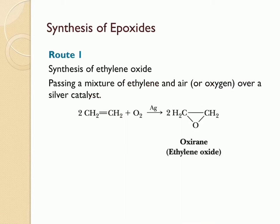Synthesis of epoxides. Ethylene oxide, one of the few epoxides synthesized on an industrial scale, is prepared by passing a mixture of ethylene and air or oxygen over a silver catalyst. This method works only for the production of ethylene oxide from ethylene, and as a result, other methods have been developed for the production of epoxides.